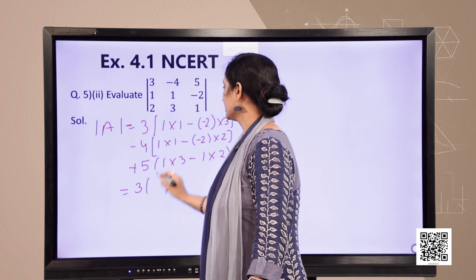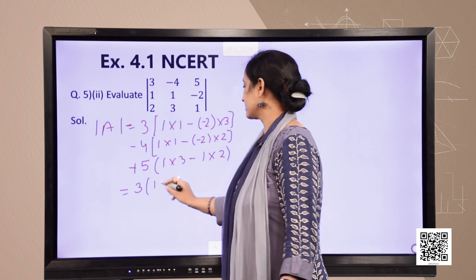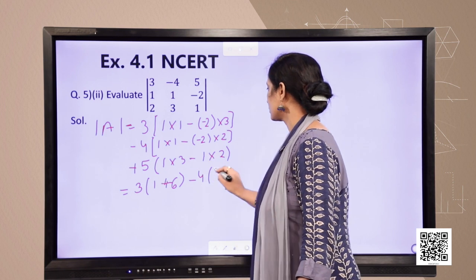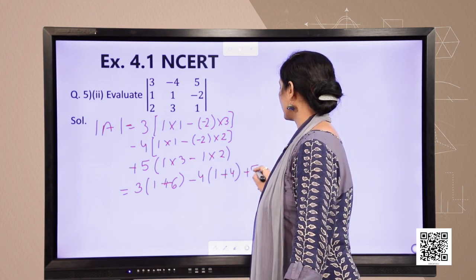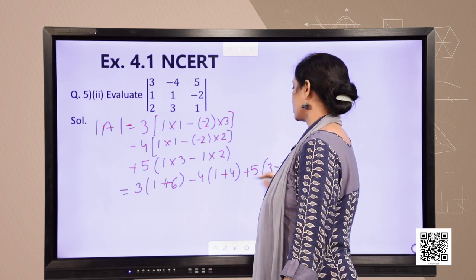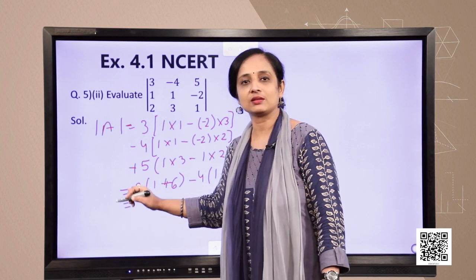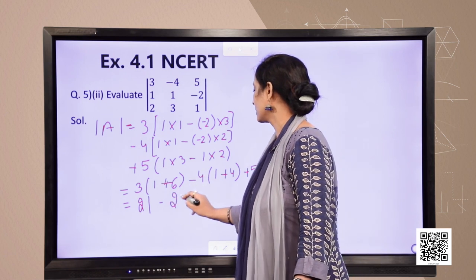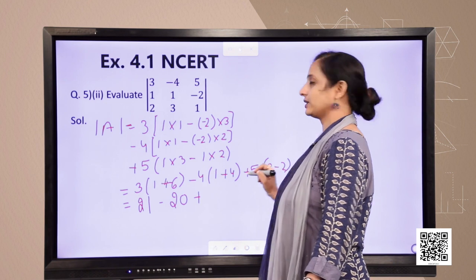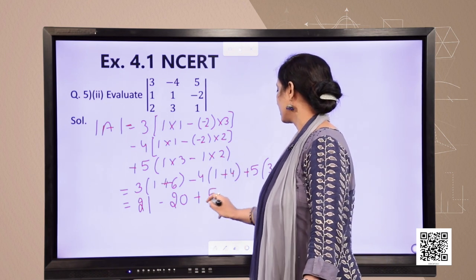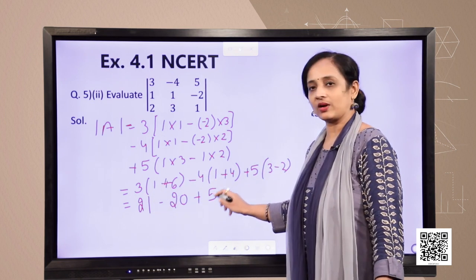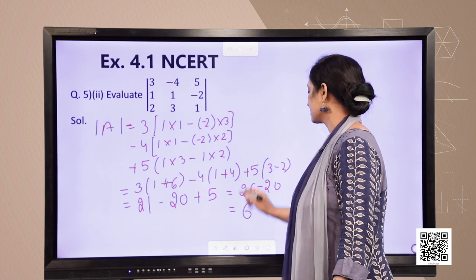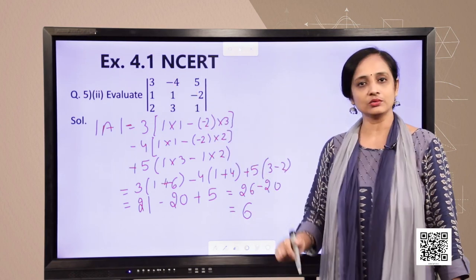Simplifying: 3×(1+6) = 3×7 = 21. Then −(−4)×(1+4) = 4×5 = 20. Then 5×(3−2) = 5×1 = 5. Combining: 21 − 20 + 5 = 6. Wait, let us recheck: 21 + 5 − 20 = 6. So this determinant is equal to 6.